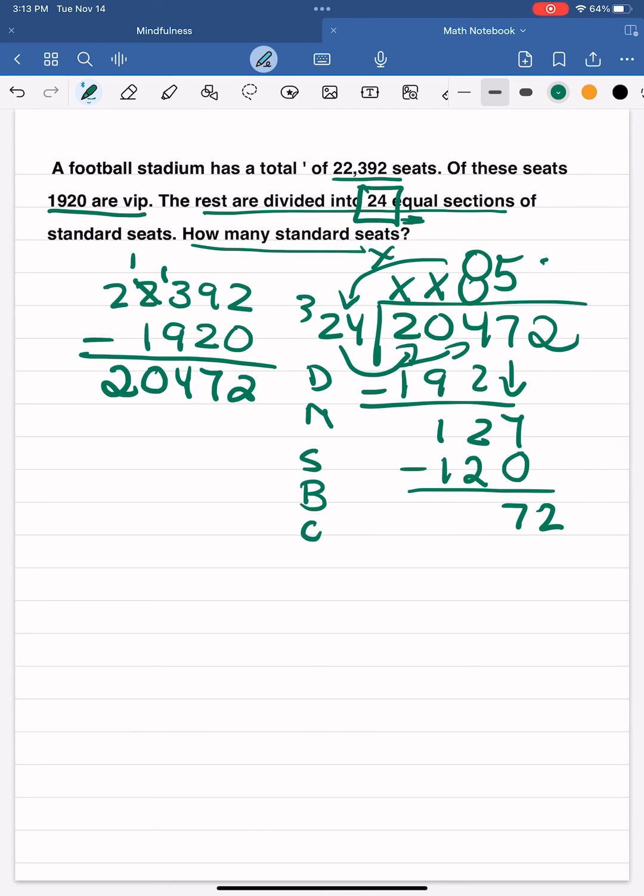I'll bring down that next digit, which is a 2. And I know that I can fit three groups of 24 evenly into 72, which gives me the product of 72, no remainder. So my answer is 853.